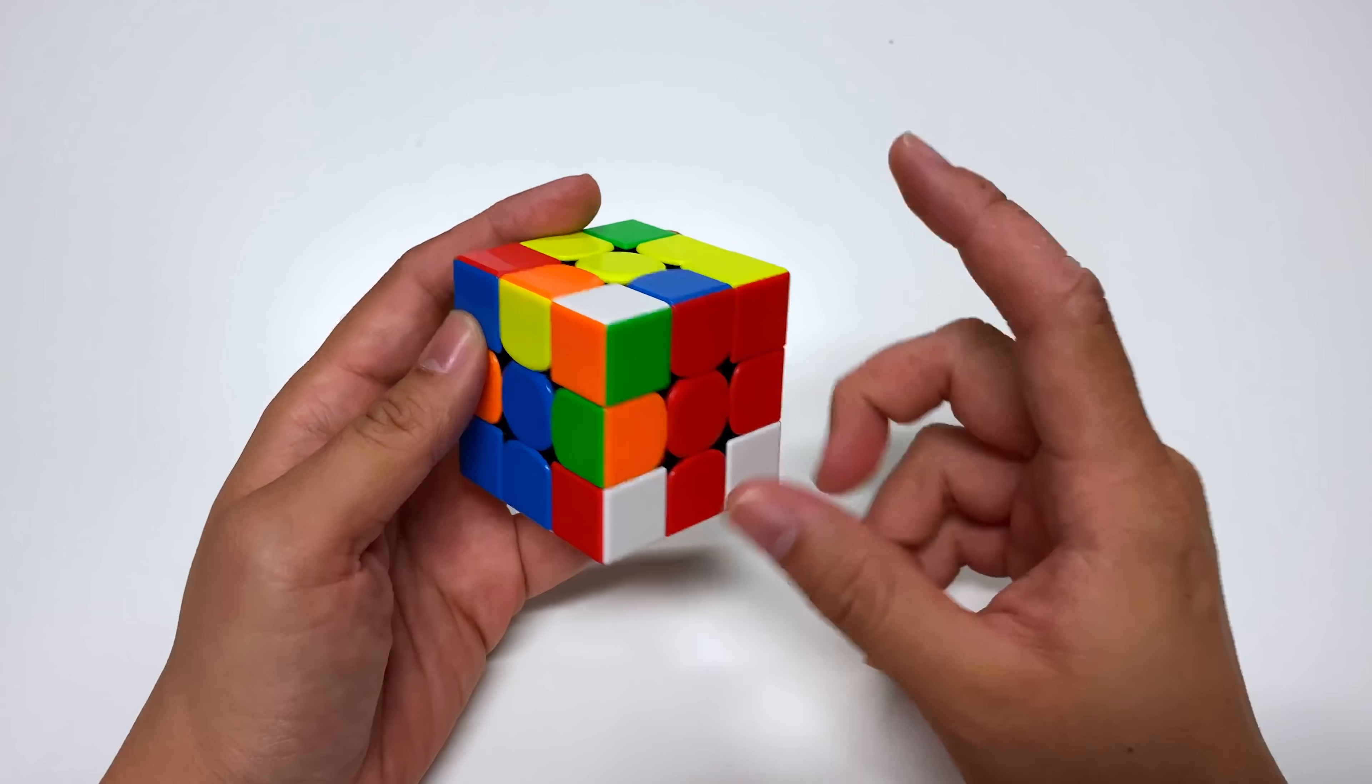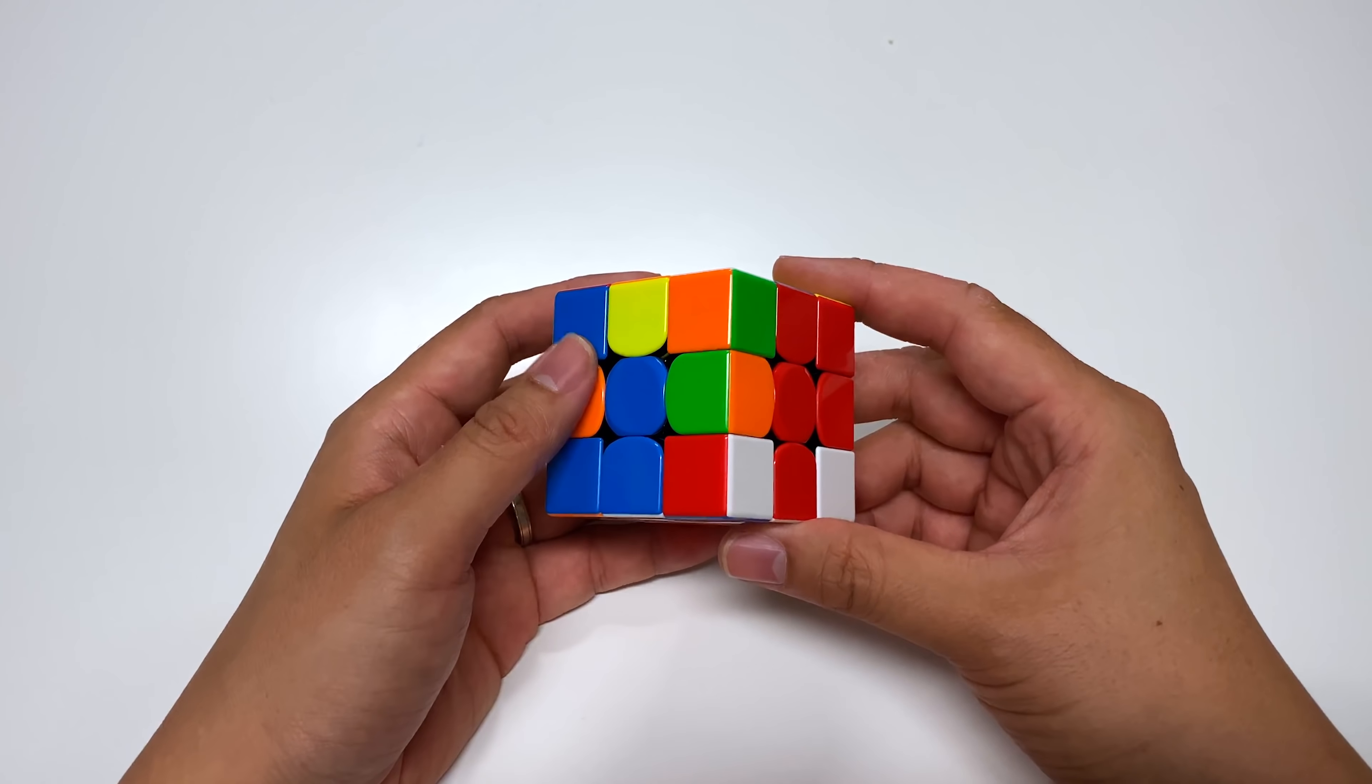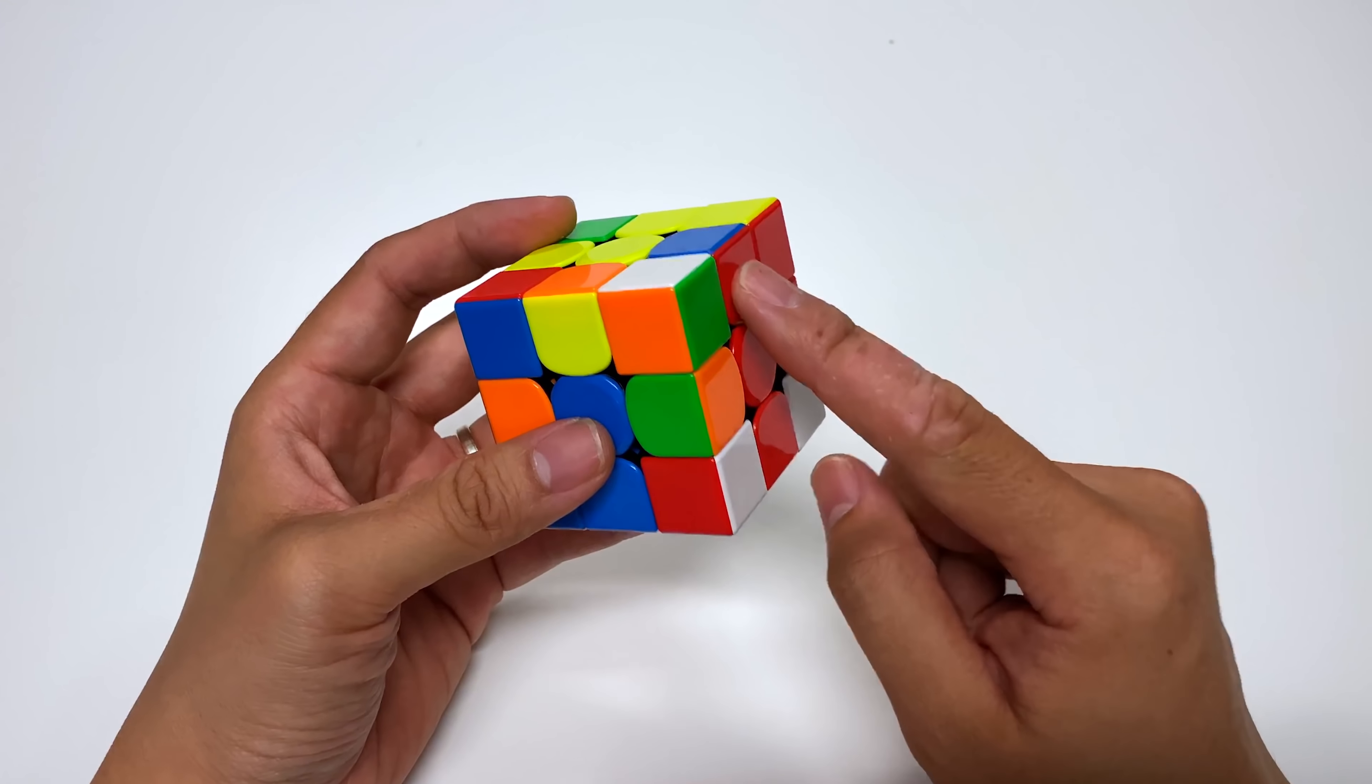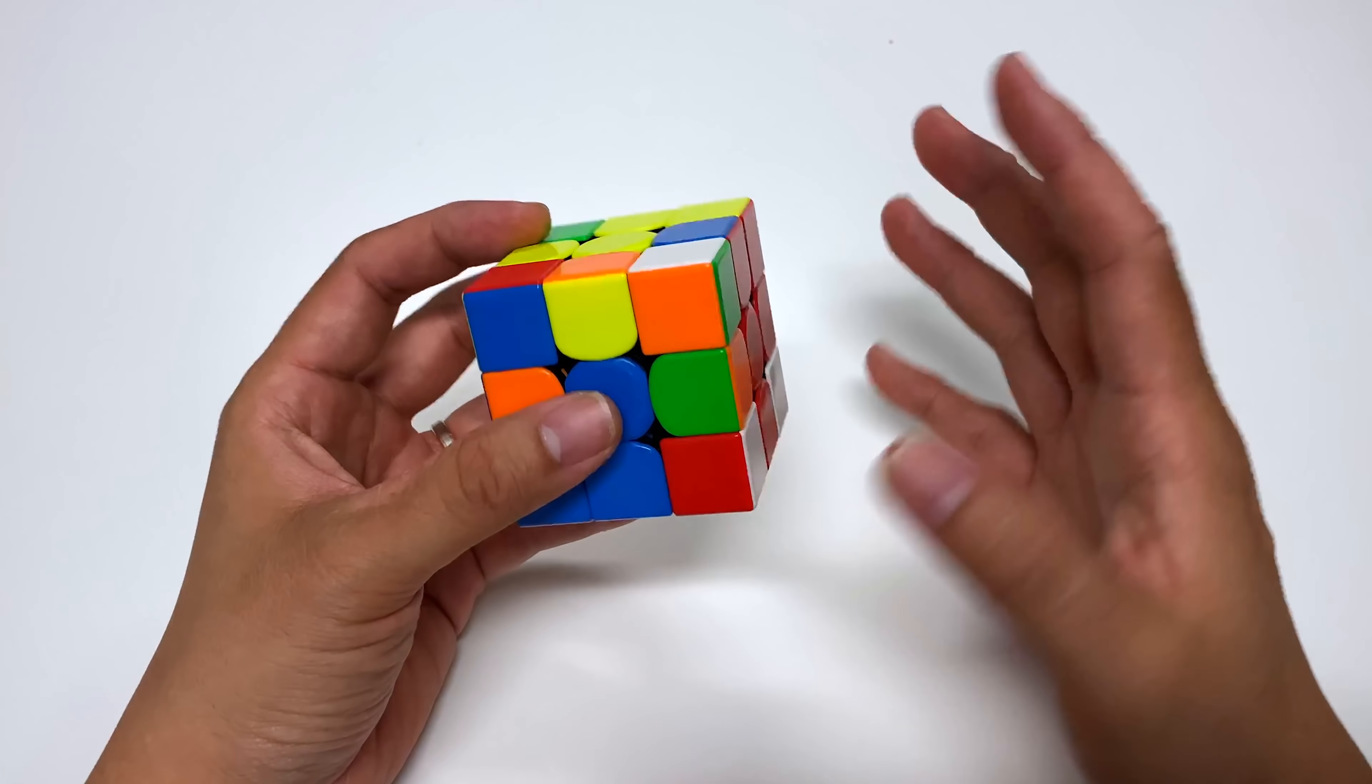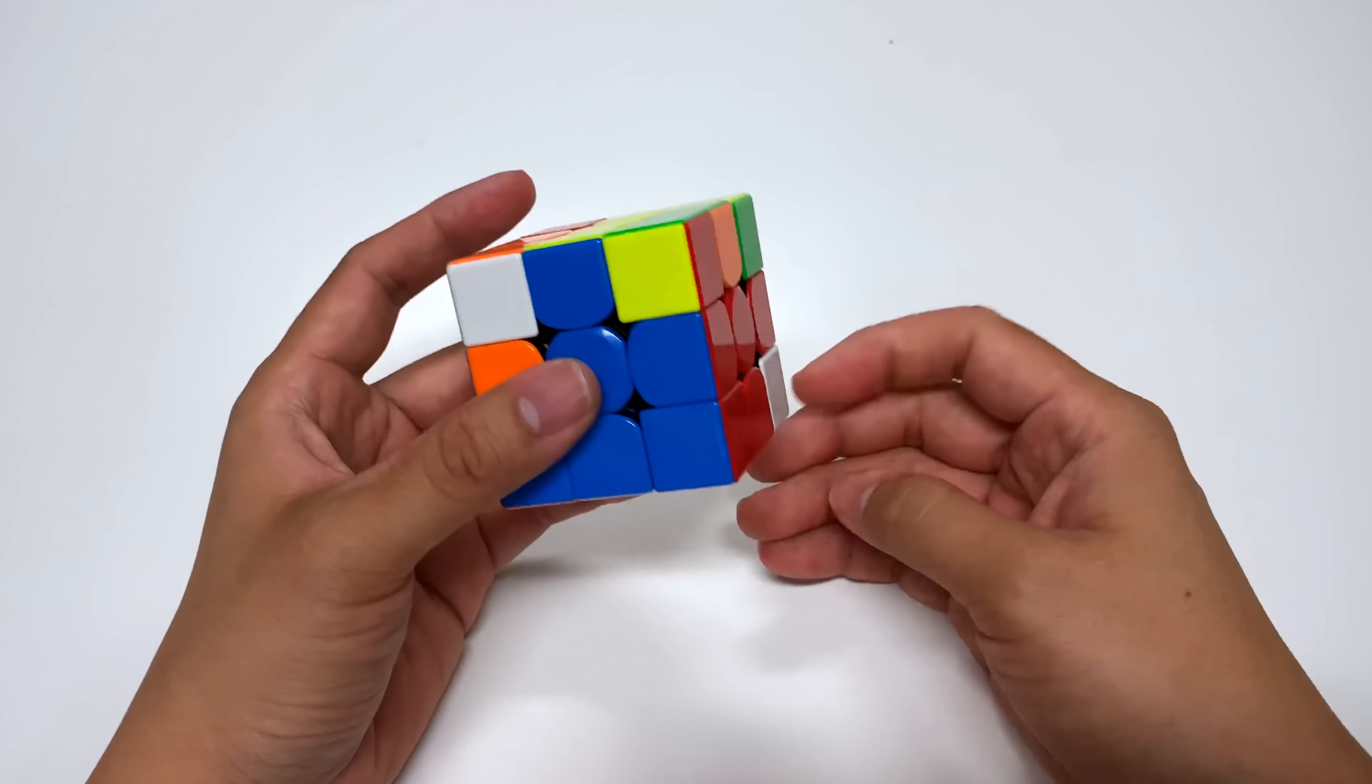But this is a really simple insert, which most of you probably know of already. But I wanted to show you what it looked like. When you get the edge matching the color here and the white sticker facing this way, in this case, it's two sexy moves. And that's it.